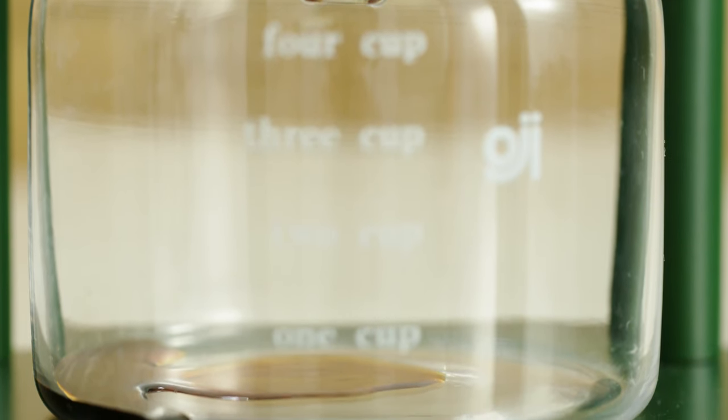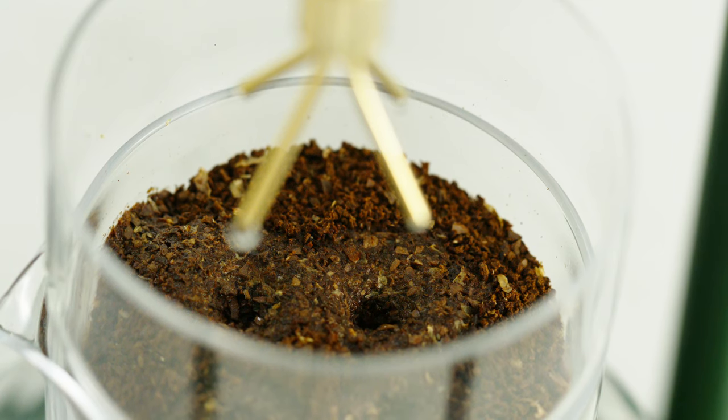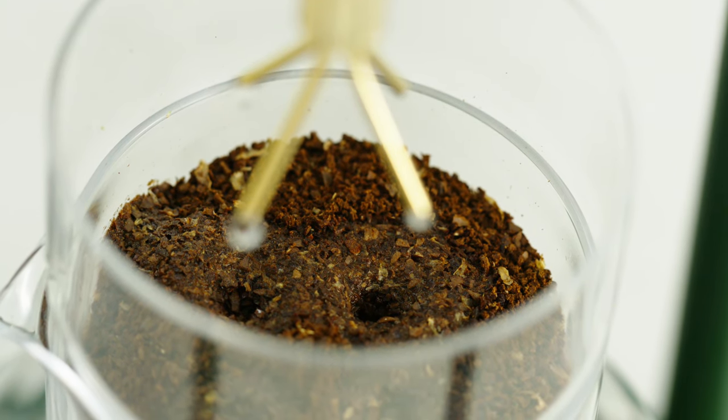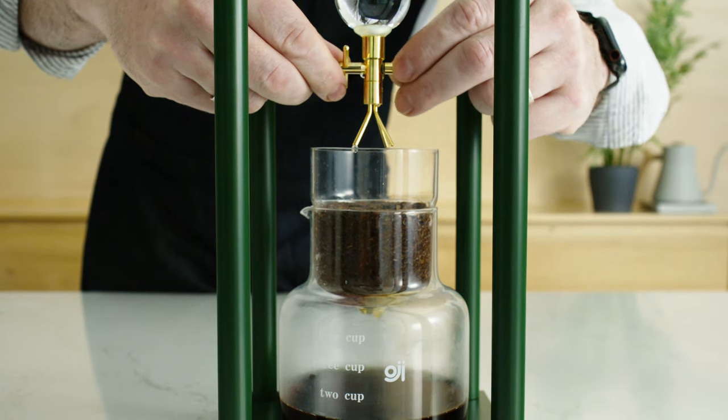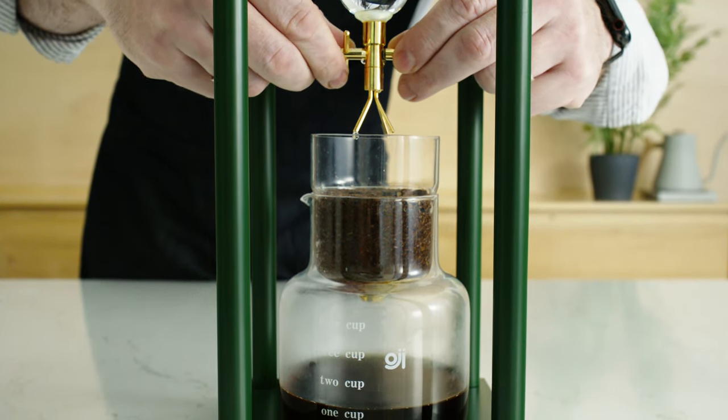Let drip until all the water has passed through the coffee. That should take about eight to ten hours. Be sure to check the drip rhythm throughout the day to ensure an even cadence.